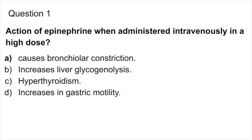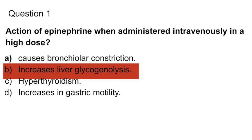Question 1. Actions of epinephrine when administered intravenously in a high dose. Options: causes bronchial constriction, increases liver glycogenolysis, hyperthyroidism, increases in gastric motility. The actions of epinephrine when administered intravenously in a high dose include increase in liver glycogenolysis, evokes extra systole in the heart, produces restlessness and anxiety, increases the blood pressure. So, the answer is increases in liver glycogenolysis.